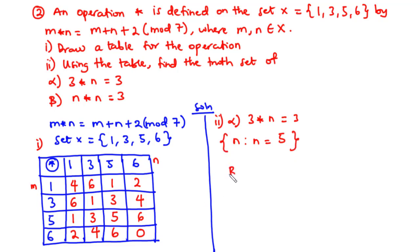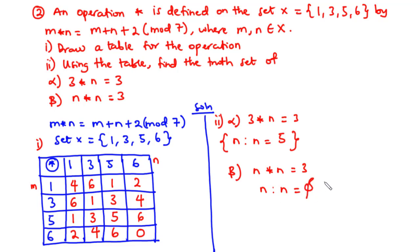For part (ii) beta, we find the truth set of n star n equals 3. Checking each element: 1 star 1 is 4, does not satisfy. 3 star 3 is 1, does not satisfy. 5 star 5 is 5, does not satisfy. 6 star 6 is 0, does not satisfy. We conclude that the truth set is the empty set — no value of n satisfies the equation.